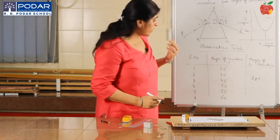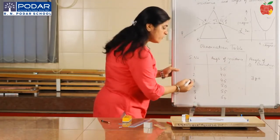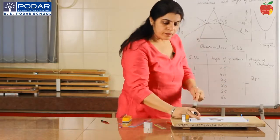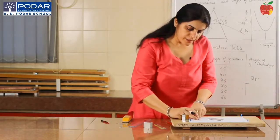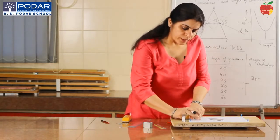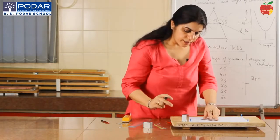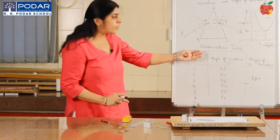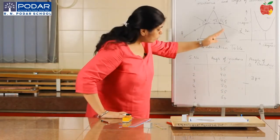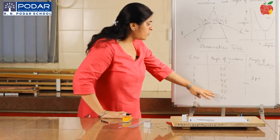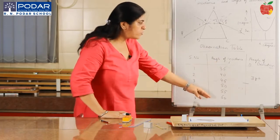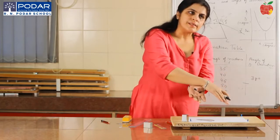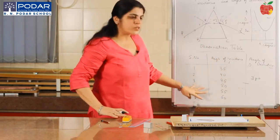Similarly, we can measure the angle of deviation for different angles of incidence — for example, 45 degrees. You will take six different observations ranging from 35 to 60 degrees, three on one side and three on the other side of the sheet.